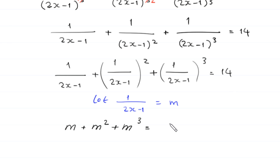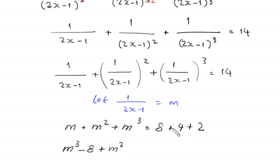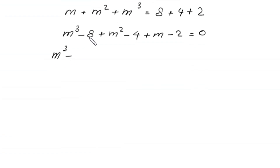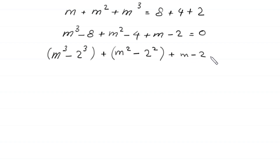We note that 14 can be written as 8 + 4 + 2. Rearranging, we move all terms to the left side: m³ - 8 + m² - 4 + m - 2 = 0. We recognize that 8 = 2³ and 4 = 2², so this becomes (m³ - 2³) + (m² - 2²) + (m - 2) = 0.